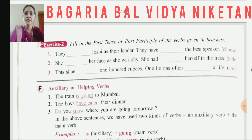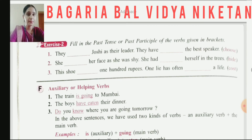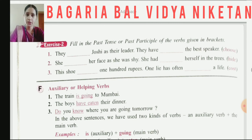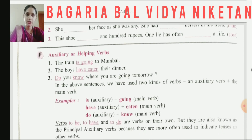Before that, the second exercise requires you to use the past tense or past participle — that is, the second or third form — according to the sentence. For example: 'They dash Joshi as their leader' — use 'chose' (second form) because it is in the past. And where 'have' appears, always use the third form of the verb with 'have'. Try to understand and do these two sentences this way.